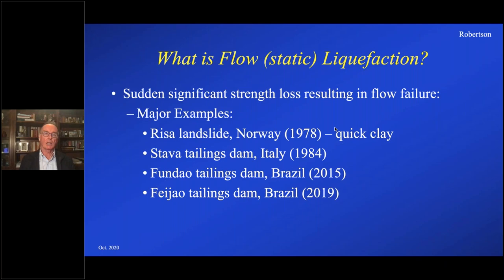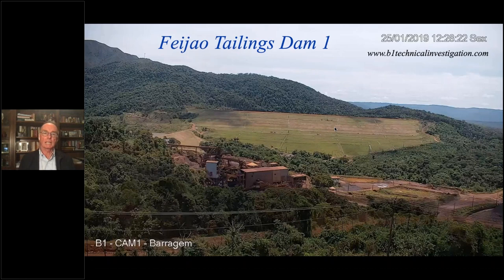What it is: it's a sudden and significant strength loss resulting in a flow failure. Major examples — one of the oldest ones is the famous Rissa landslide in Norway back in 1978, which was a quick clay landslide caught on camera. There is a YouTube video — you can see the similarities, even though it's a quick clay. Then of course there have been several tailings dam failures: the Stava tailings dam in Italy in 1984, and more recently the Fundão tailings dam in Brazil in 2015.